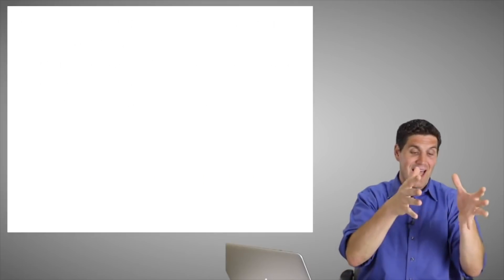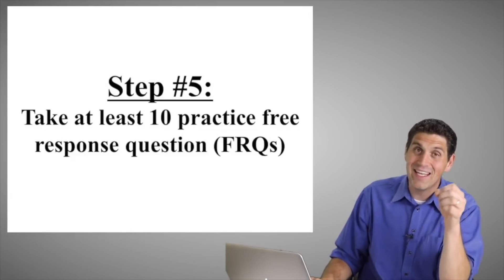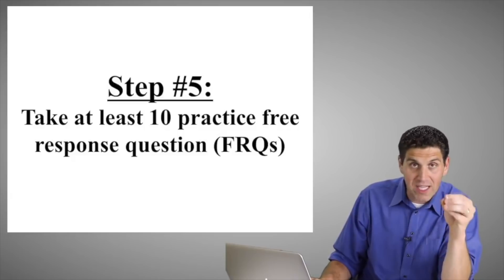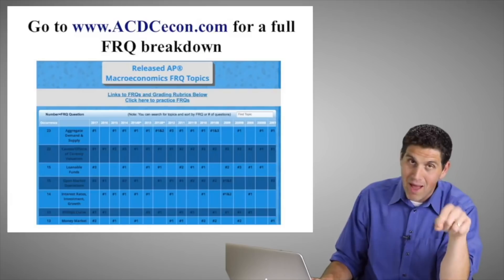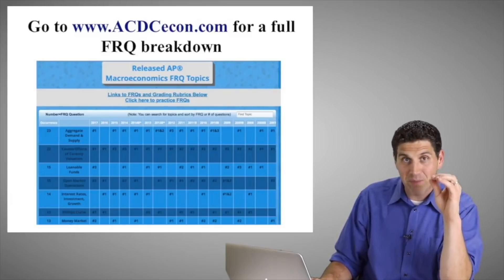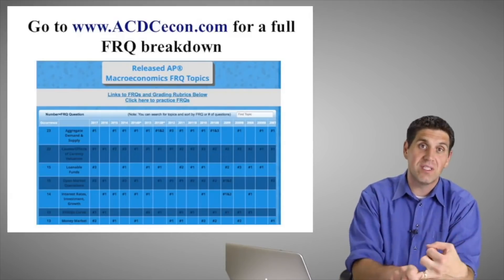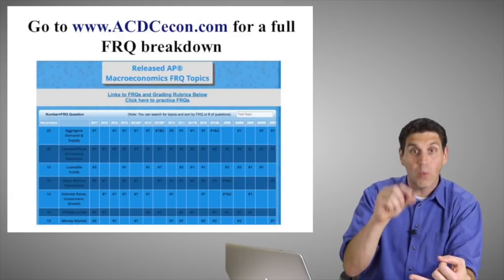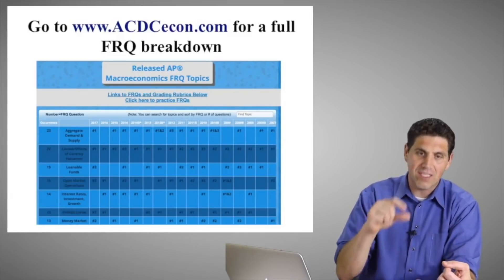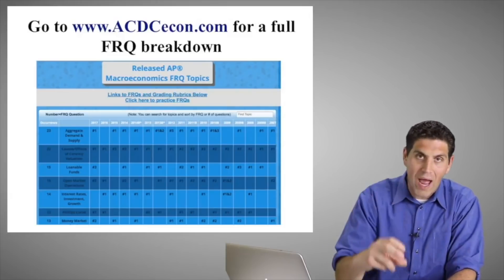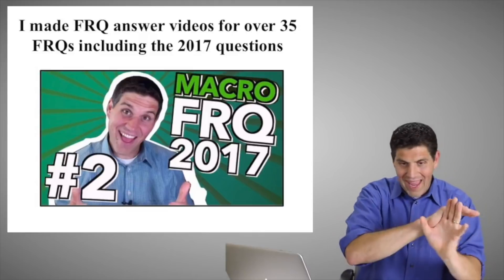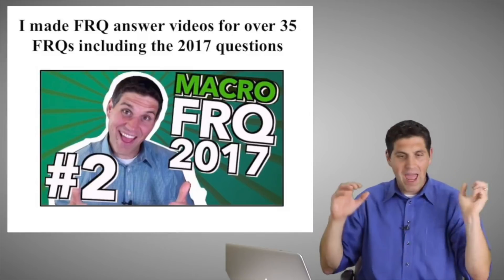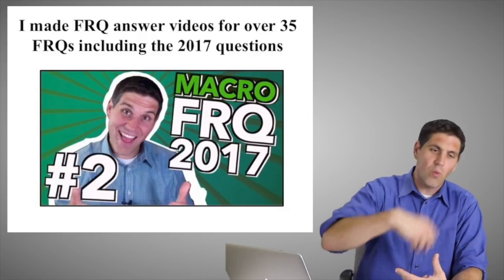Step five: remember the AP test is two-thirds multiple choice questions and one-third free responses. Take at least 10 practice free responses — these are all available on the College Board website as released free responses. Pick 10 of them and try them based on the concepts you need to practice most. On my website, acdcecon.com, I have a free response breakdown listing them by topic and frequency, so you can see how often certain questions are asked. For example, 2017 asked about the Phillips curve. Inside the ultimate review packet, I have more than 35 free response videos where I go over the answers. Do the free response on your own first, and if you're confused, watch the video — I explain the entire thing.